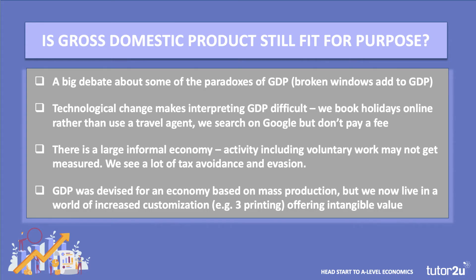Before we finish this second video, let's say a few words on the difficulties that many economists now have with GDP as a reliable measure of national economic activity. There's a big debate about some of the paradoxes of GDP. If I am playing football in the garden and I break a window with an errant shot, the broken window actually technically adds to GDP — somebody's got to replace it, and there's a service and a manufactured product involved. If a ship goes aground and pollutes the coastline, that also technically adds to GDP because of insurance and cleanup costs and replacing ships.